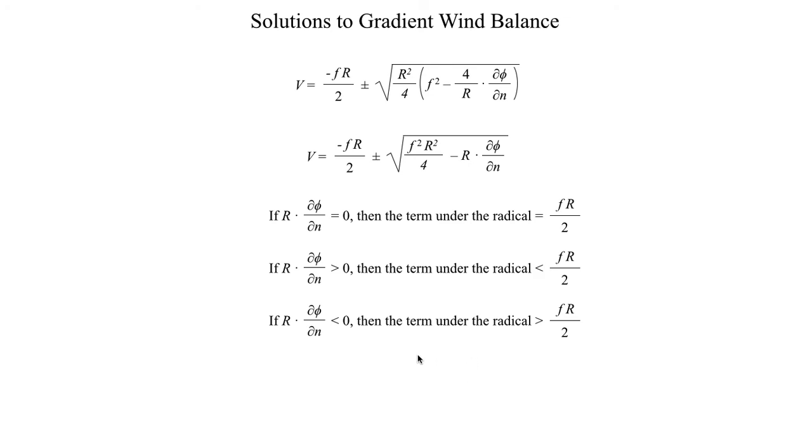These are mathematical details that we're going to want to keep in mind going forward. Make sure that the logic behind that actually makes sense, that you understand how these different combinations of R times dφ/dn actually influence the size of the term underneath the radical. That's going to do it for this first segment. In the next segment we're going to take a closer look at the solutions that we arrived at and all the possible combinations we can have from that solution. I will see you all in the next segment.